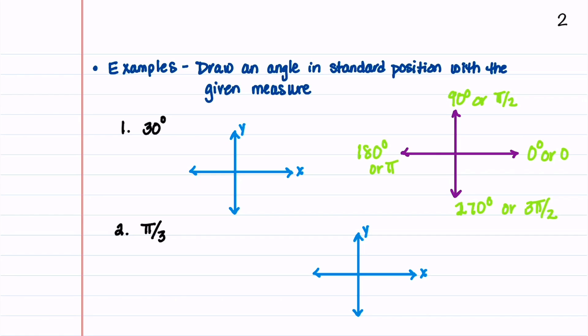Let's now label our quadrants. Our first quadrant is in the upper right-hand side. The second quadrant is upper left, the third quadrant is on the lower left, and the fourth quadrant is on the lower right. The first angle that we're going to draw is 30 degrees. Let's note that this is in the first quadrant, and we'll draw our initial side and then our terminal side at 30 degrees. So that is an angle in standard position of 30 degrees.